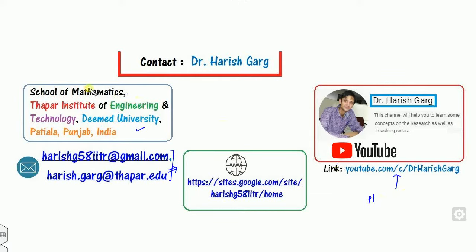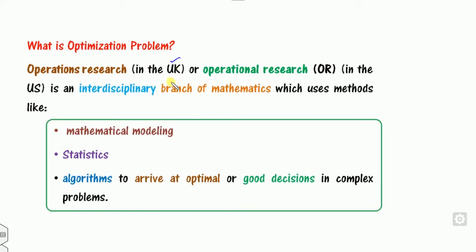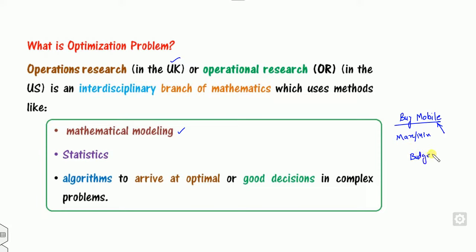What is the optimization problem or optimization technique? Operations research, usually called operational research in the UK, is an interdisciplinary branch of mathematics. It uses three main areas: first, mathematical modeling — you have to model the problem. For example, if you want to buy a mobile phone, what is your objective function? What do you want to maximize or minimize, subject to constraints like budget?